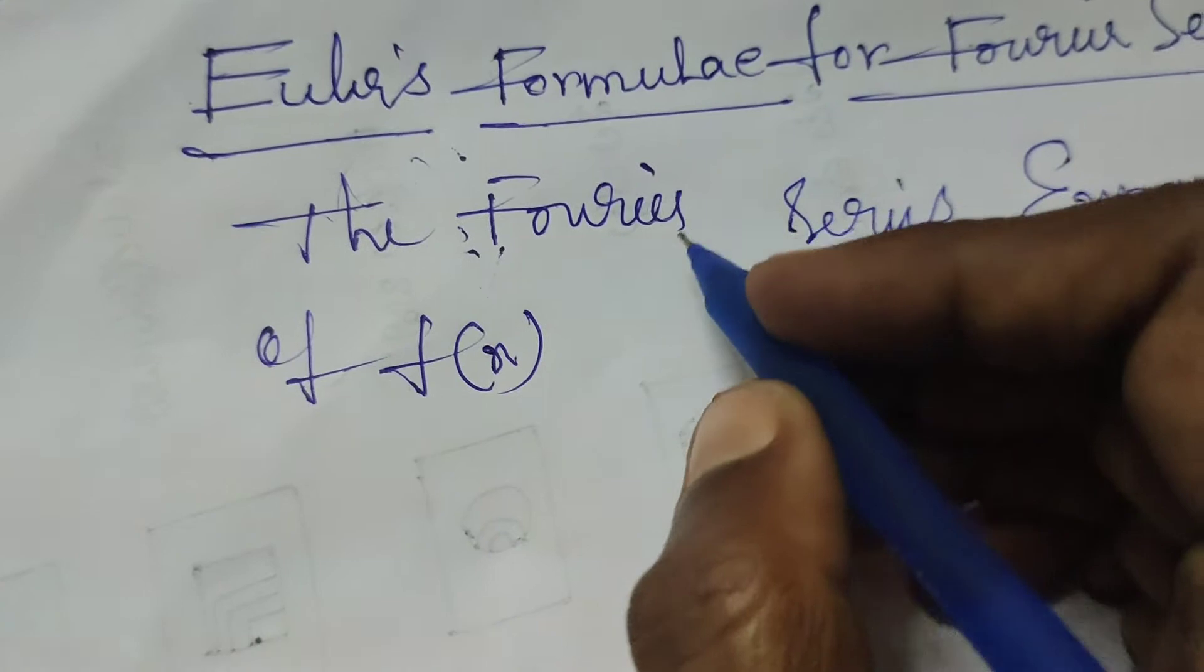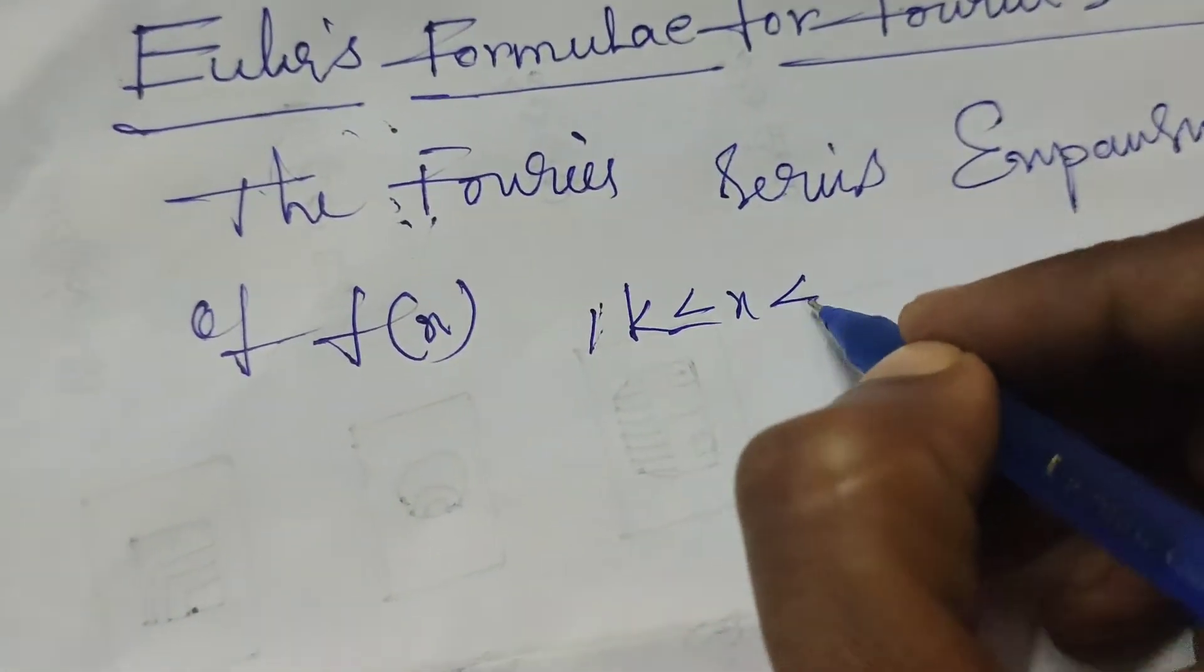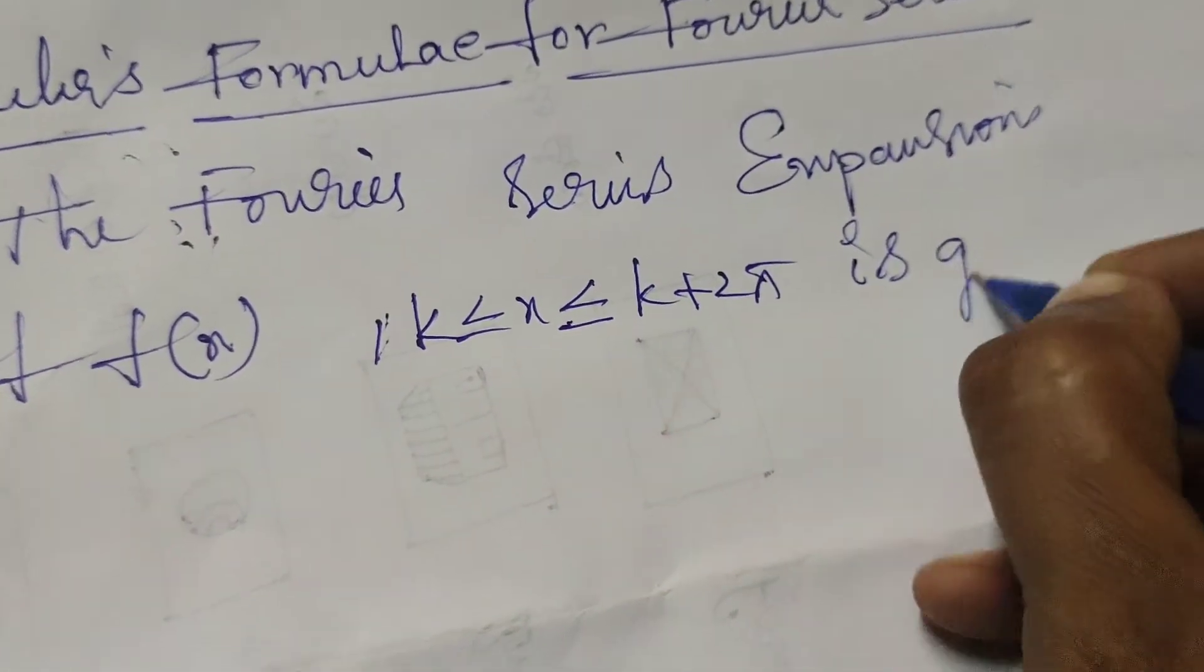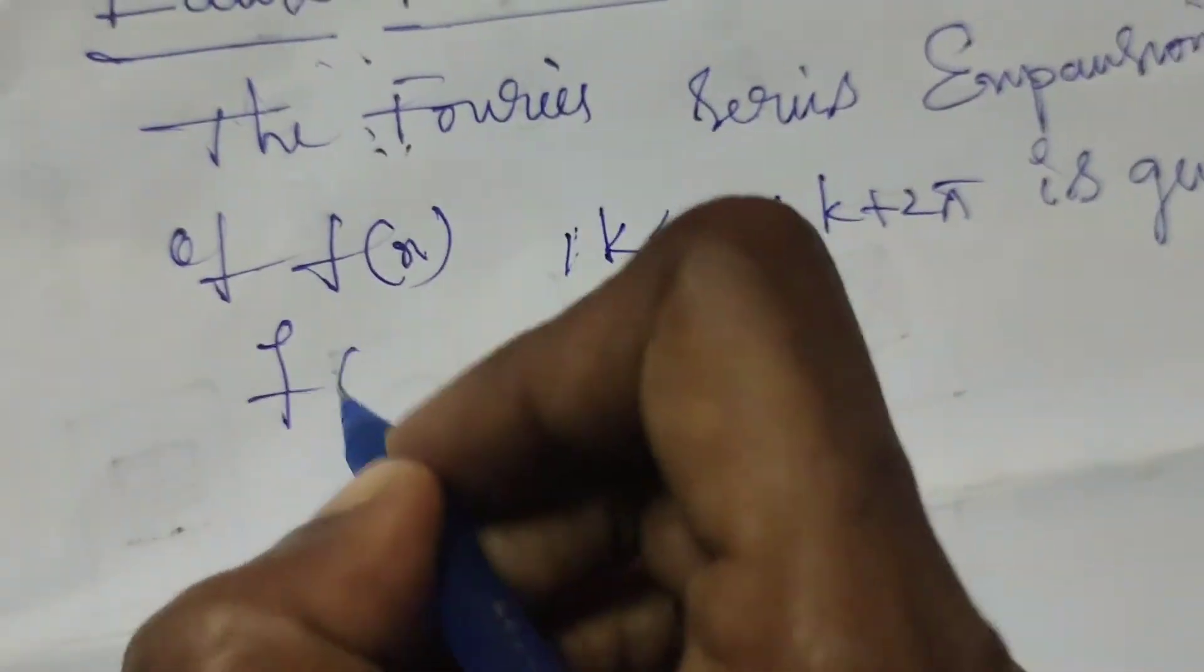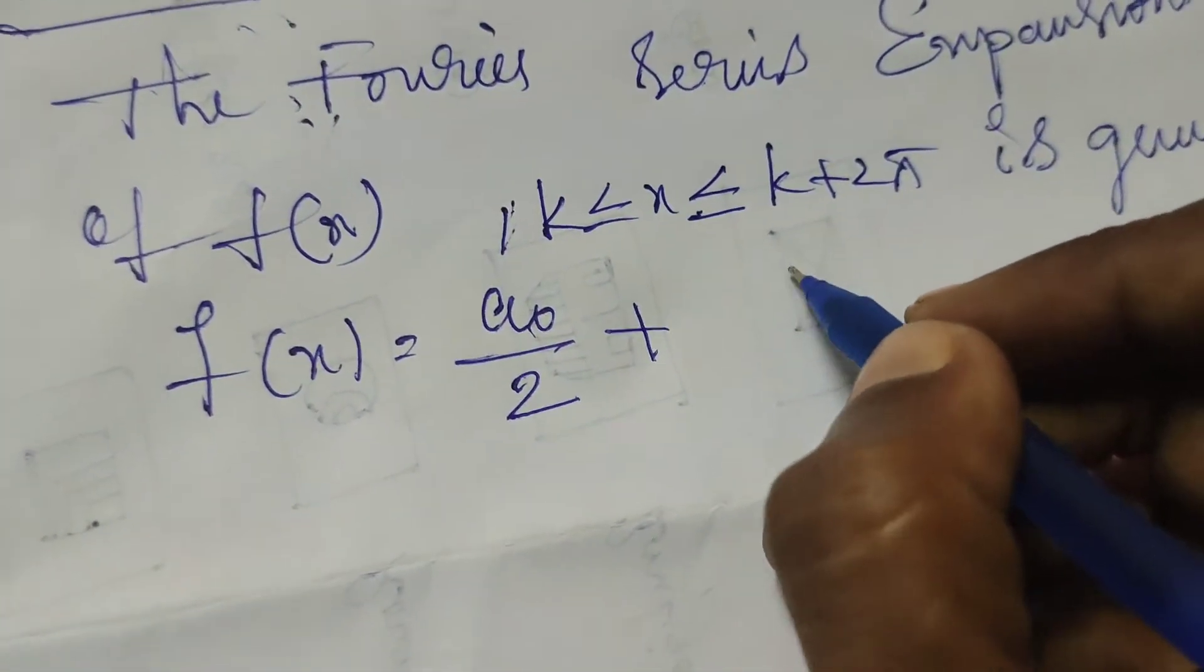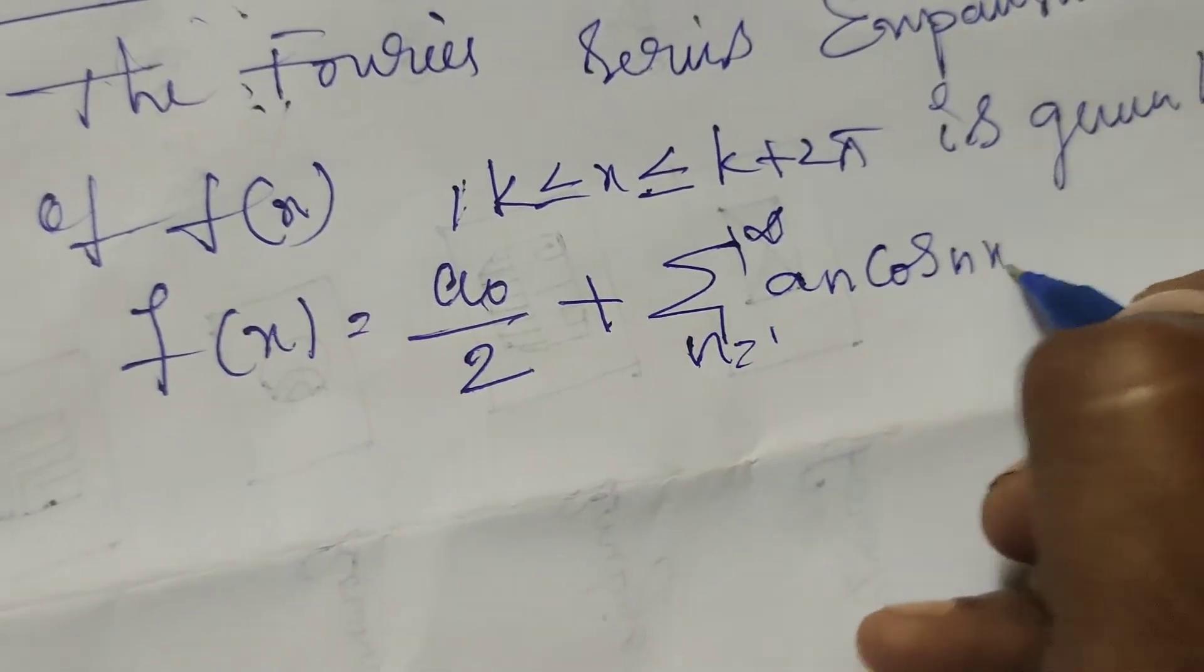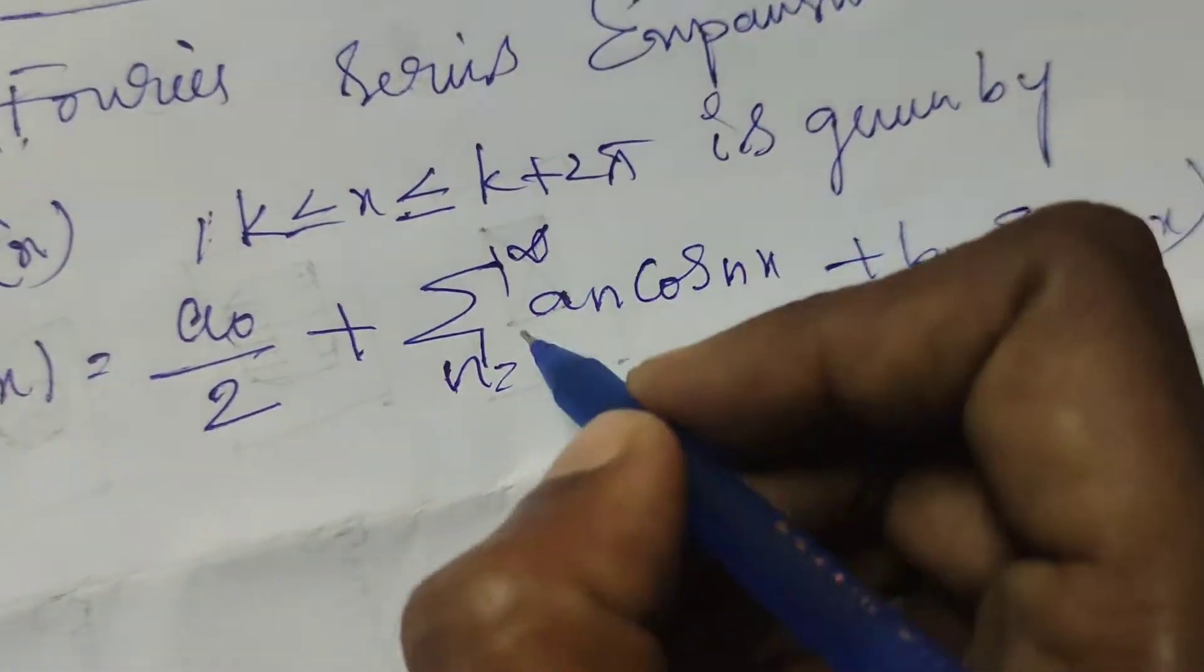considered in the interval k less than or equals to x less than or equals to k plus 2π. By applying the function, suppose f of x is given by, therefore f of x equals to a0 by 2 plus sigma n equals 1 to infinity an cos nx plus bn sin nx. This is the Fourier series expansion.